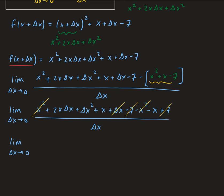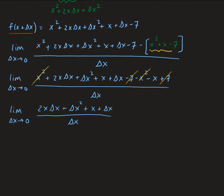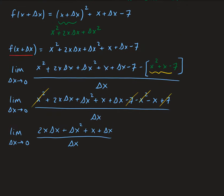x squared minus x squared is zero. The x here also cancels out with this x. So we're left with the limit of 2x delta x plus delta x squared plus delta x, all divided by delta x.